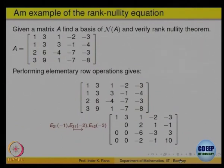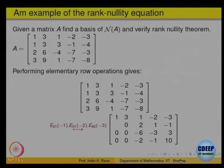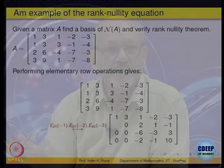What does the rank-nullity theorem say? For this matrix, I should find the rank and the nullity. Nullity is the dimension of the null space — that is, the homogeneous system Ax = 0. Find the dimension of that. Add them up and I should get n. For an m×n matrix, I want to verify that.